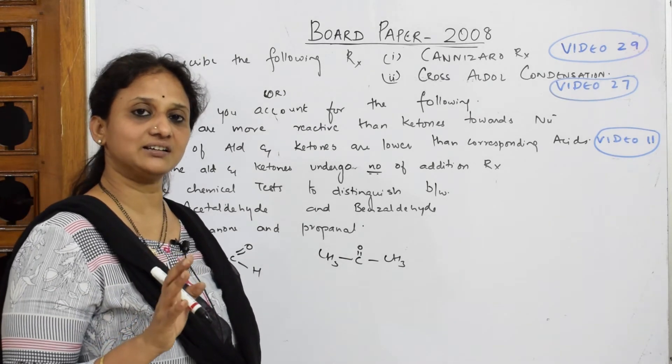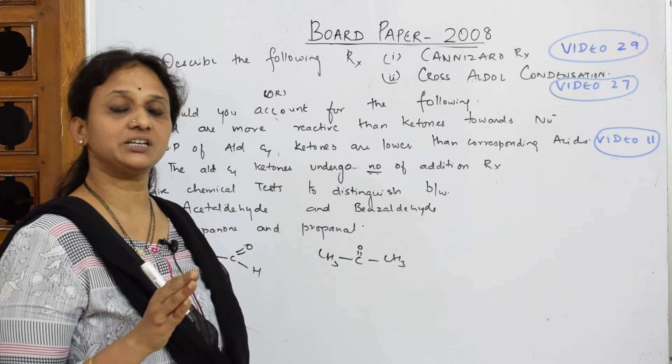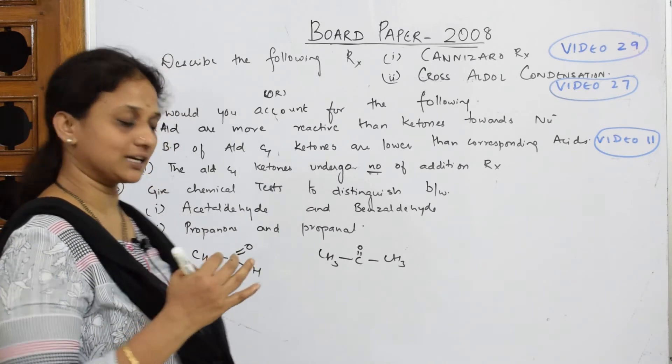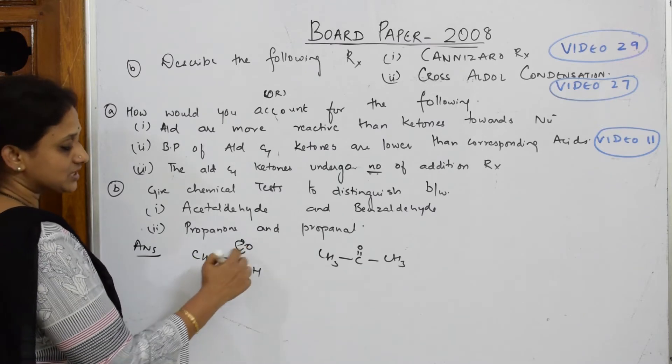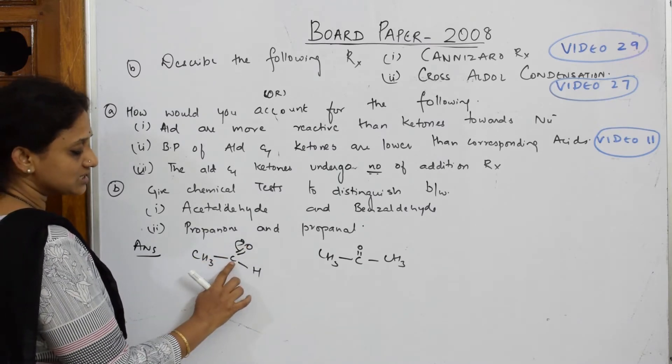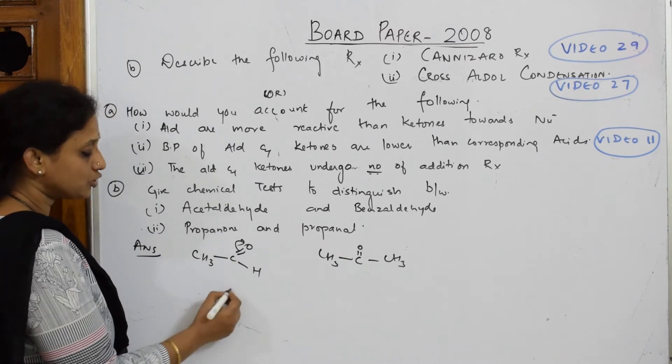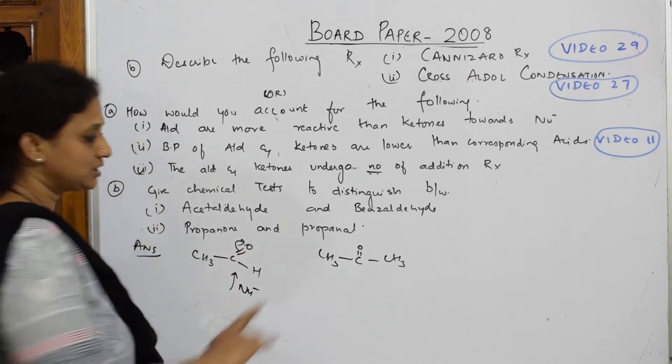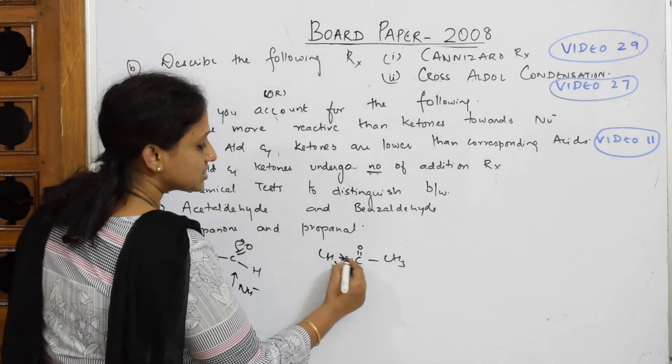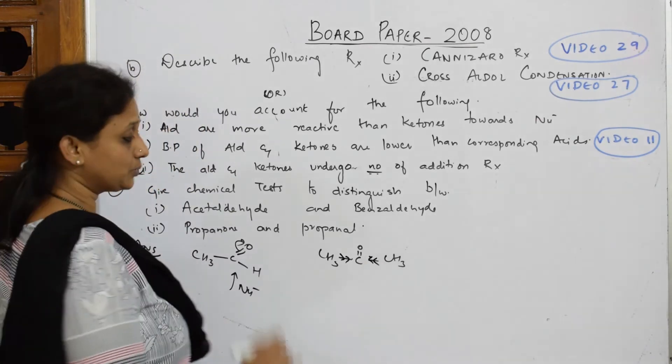What is happening in aldehyde and ketone? They said nucleophile has to attack. For a nucleophile to attack, there should be a site which is created - an electron deficient site to be created so the nucleophile will come and attack. So what happens here? This oxygen is highly electronegative. When it's dragging electrons, a site where positive charge is created here.